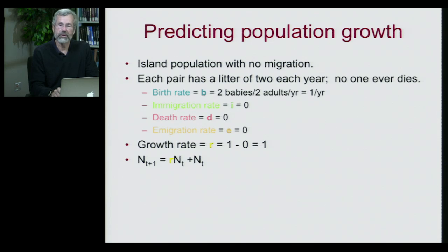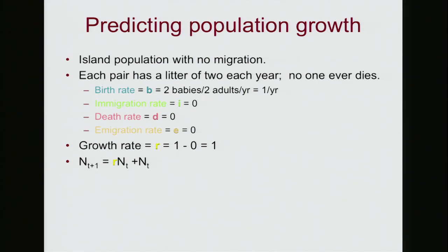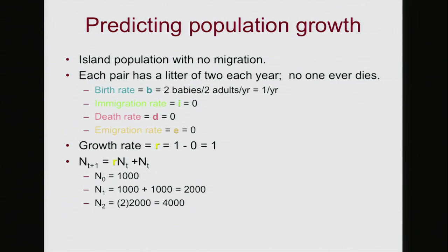Now what we want to do is predict population growth rate from R. We follow the formula where we have an initial population size N sub t, and every year there's an increment determined by the intrinsic growth rate, giving us the population size of the next generation, N sub t plus one. Starting with a population of one thousand, after one year they'll have had another thousand babies added, so it's two thousand after one generation. At the second generation it doubles again to four thousand individuals.